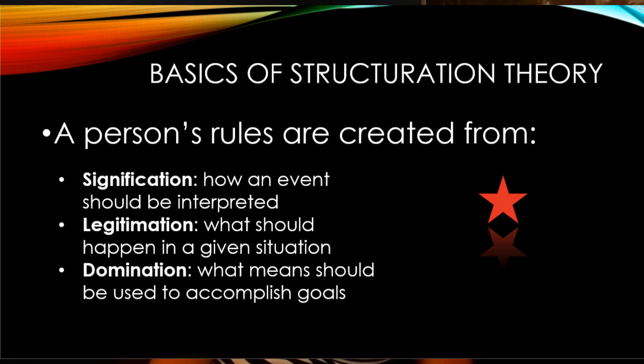A person's rules are created from three basic structures: signification, legitimation, and domination. These terms were also explained in our textbook. Signification is how an event should be interpreted. Legitimation is what should happen in any given situation — what is legitimate, what should be there. And domination, finally, is what means should be used to accomplish those goals.